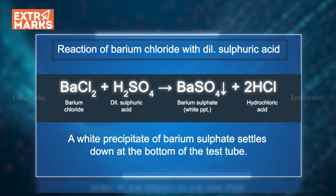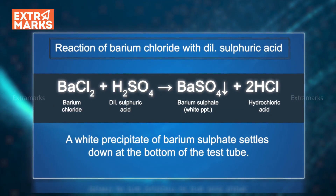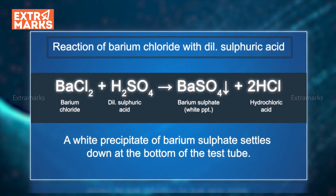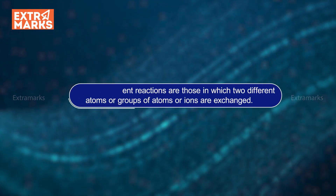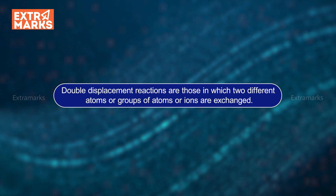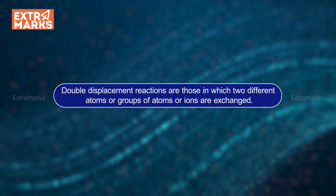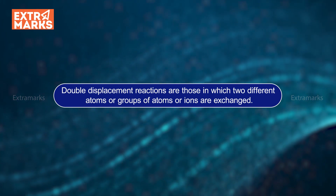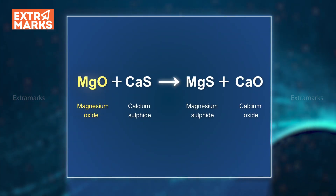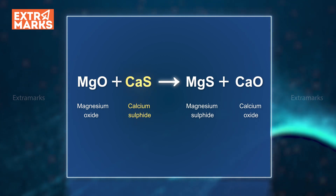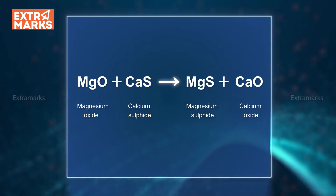In this reaction, barium and hydrogen ions exchange their positions from their compounds. So, we can say that, in general, double displacement reactions are those in which two different atoms or groups of atoms or ions are exchanged.